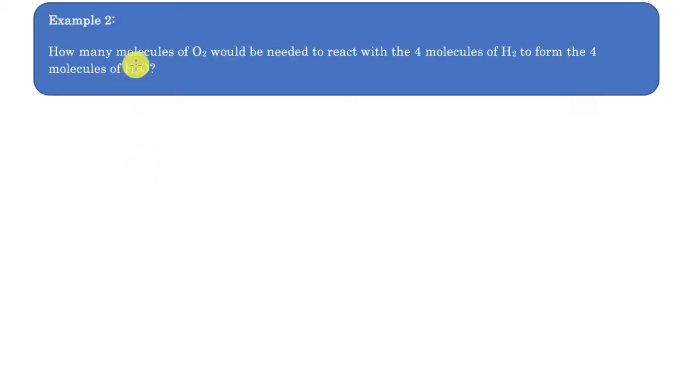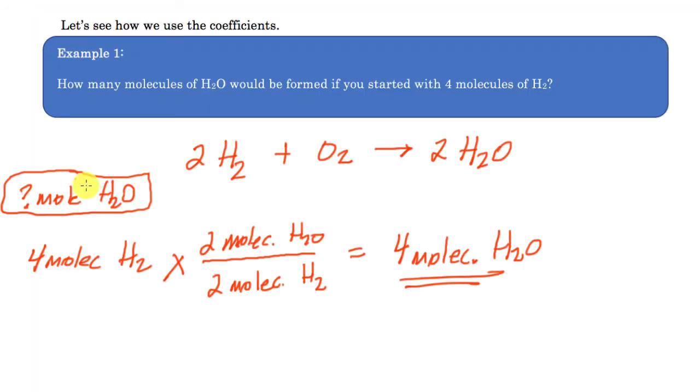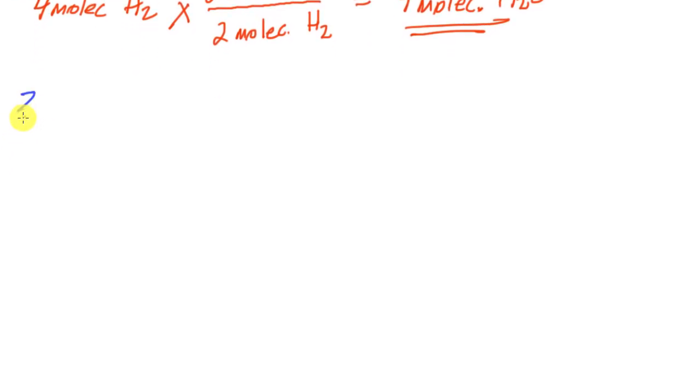So in this reaction, what we're looking at is how many molecules of oxygen would be needed to react with four molecules of hydrogen to form the four molecules of water. So actually, let's go back to the previous question. Let's go back to the last question we just did, or at least the work we did. So this time, we're looking for how many molecules of oxygen would be needed to react with those four molecules of hydrogen. So we're looking for the molecules of oxygen.